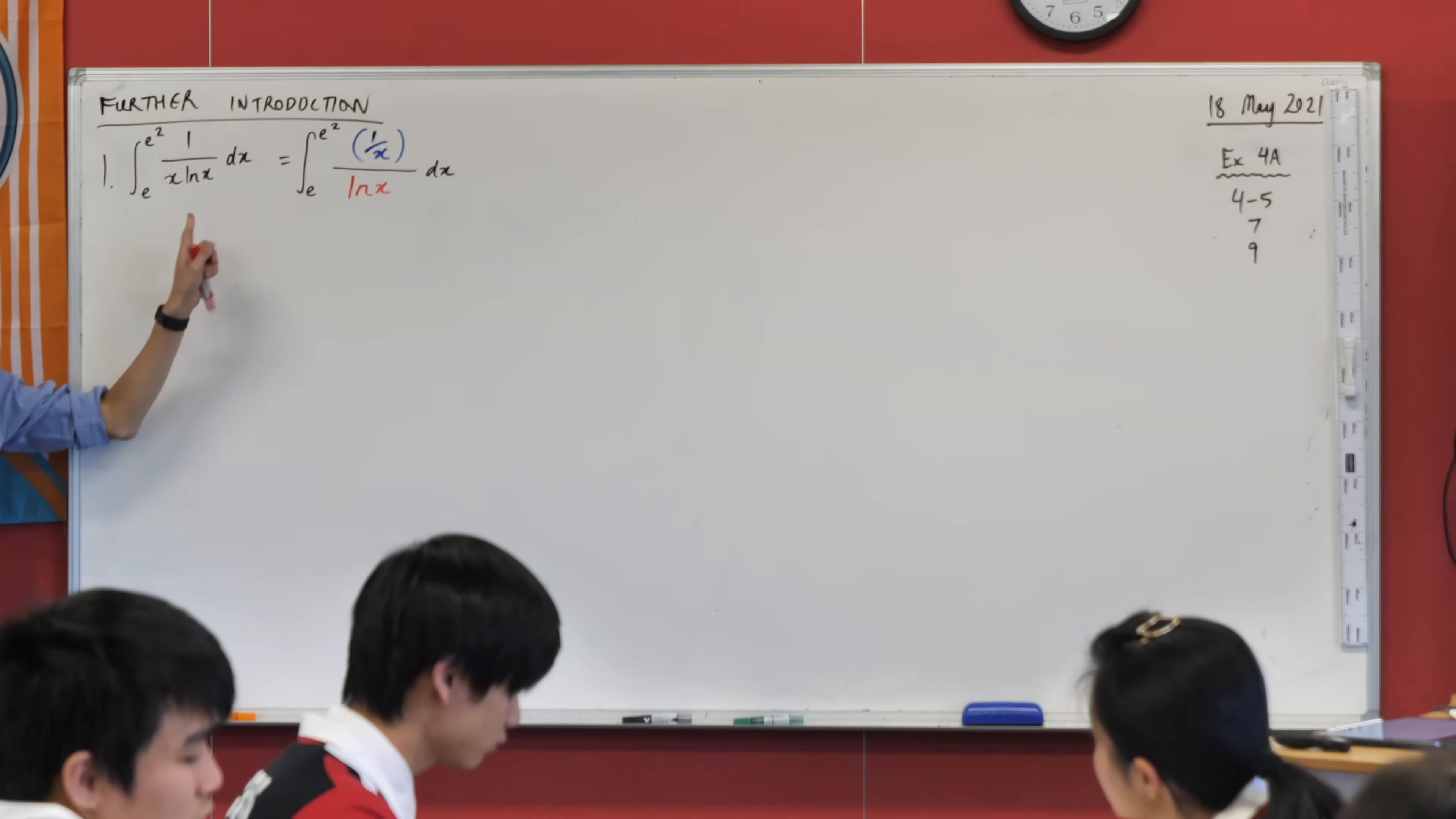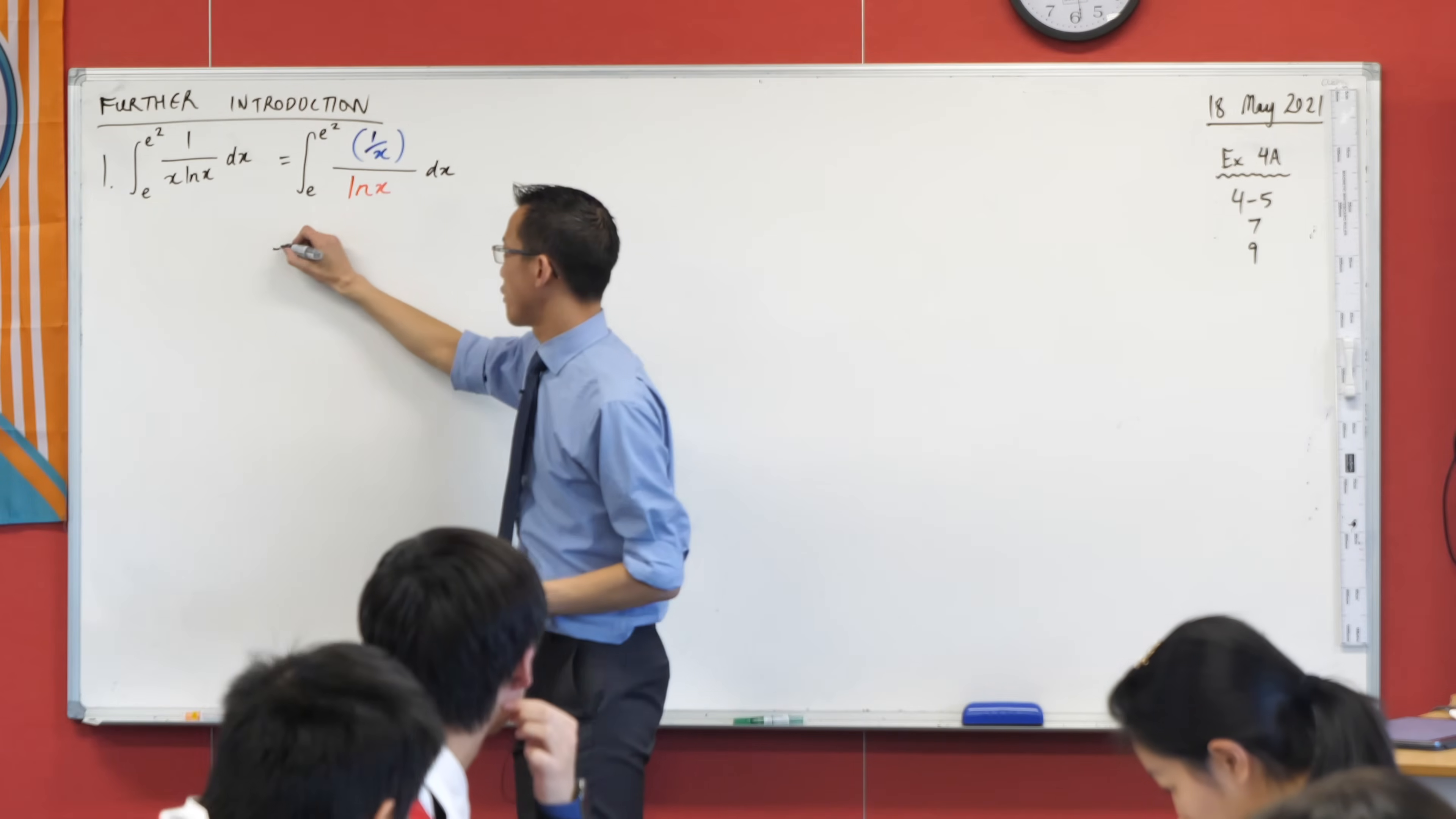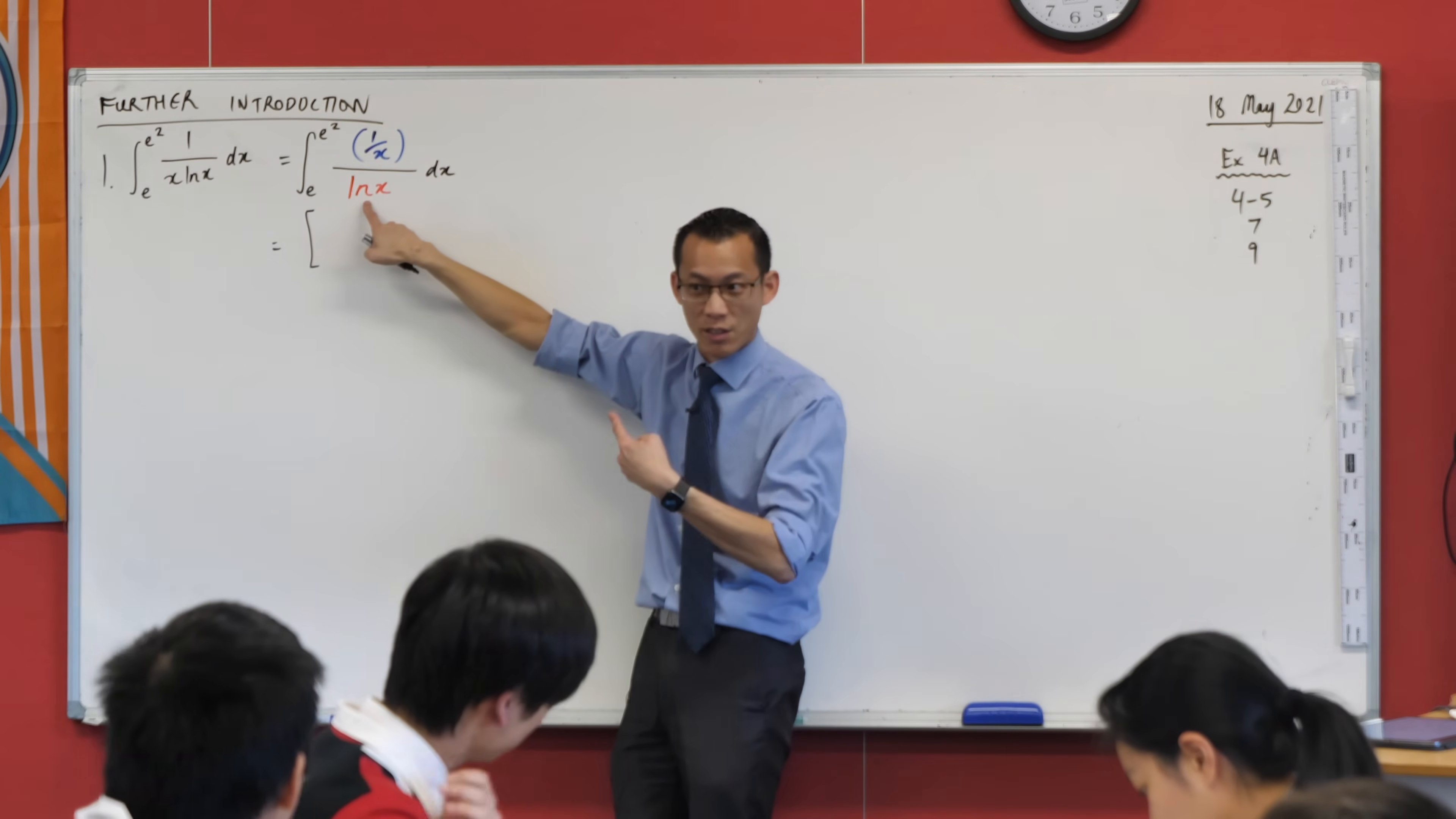Do you see how I split apart this fraction? Usually fractions on fractions are worse, but in this case we know what the derivative of log x is - it's 1 over x. I'm there. There's my f dash on f. I've got a definite integral, so I'll chuck in my big square brackets here.